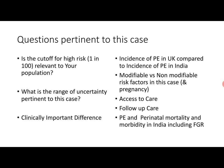Several questions are pertinent to this case: Is the cutoff for high risk of 1 in 100 relevant to your clinical population? What is the range of uncertainty for this case? What is the range of clinically important differences? We also need to consider the incidence of preeclampsia in the UK — since this algorithm was developed in the UK — compared to India, where the incidence is 1–2% versus 8–10% among pregnant women.